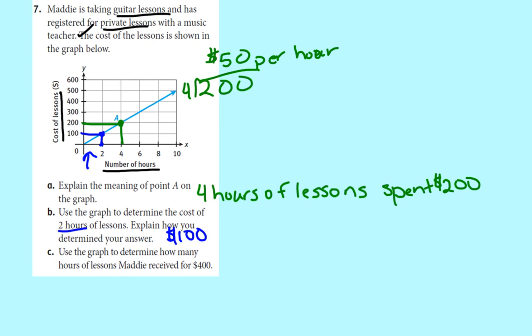Use the graph to determine the cost of two hours of lessons. So if that's the case, we want to know the cost, which is our y variable. And we know that x is 2. So we just go follow 2 to where it hits the line, which is right there. And then we just go over here, and we get that at two hours, that would cost $100. Explain how you determined your answer with this blue line right here. That's how I determined it. One more. Use the graph to determine how many hours of lessons Maddie received for $400. This is the same concept as B, except now instead of knowing hours and finding costs, now we know costs, and we're finding hours. So we start at $400. Again, we follow it to the line. There it is. And then we just see where that lies on our x-axis, our x-coordinate for that. And we get eight hours.